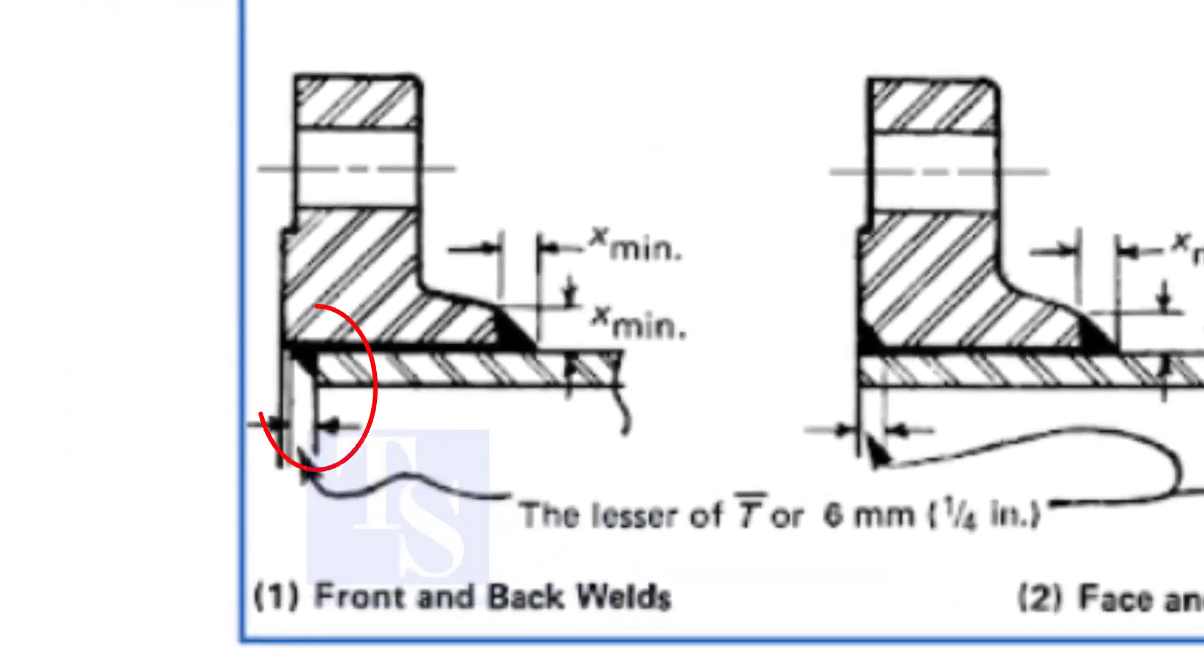In the first method, the flange is overlapping the pipe. The overlap shall be the thickness of the pipe or a minimum 6 mm.